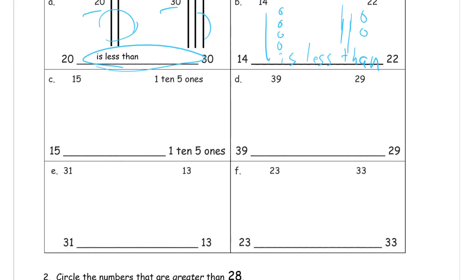So 15 is a 10 and five ones: one, two, three, four, five. And here we have in unit form one ten and five ones, and these are equal. So we write: 15 is equal to one ten five ones.